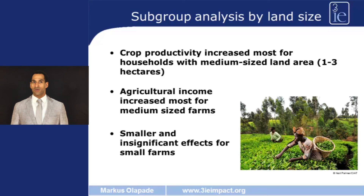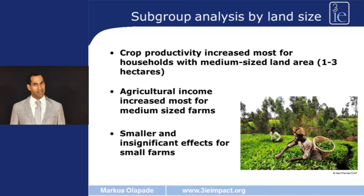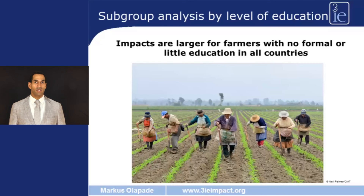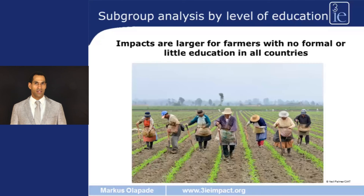When it comes to smaller farms, we observe smaller effects that are insignificant. The analysis by education level shows that it is farmers with no formal or little formal education that benefit most.